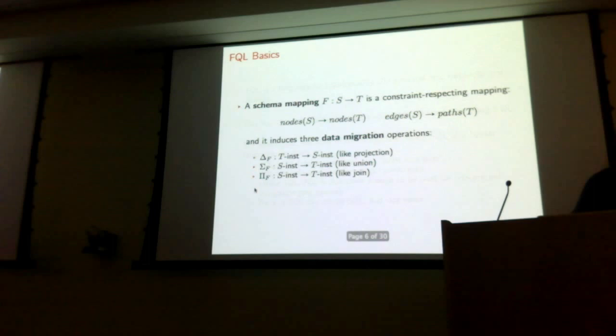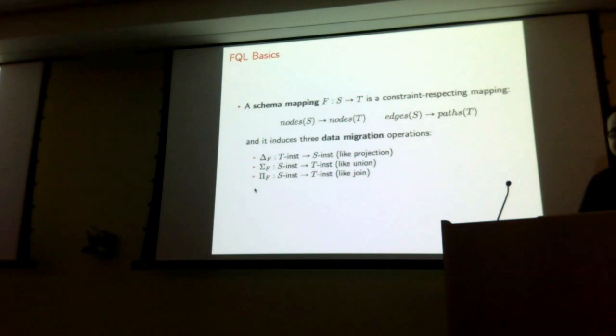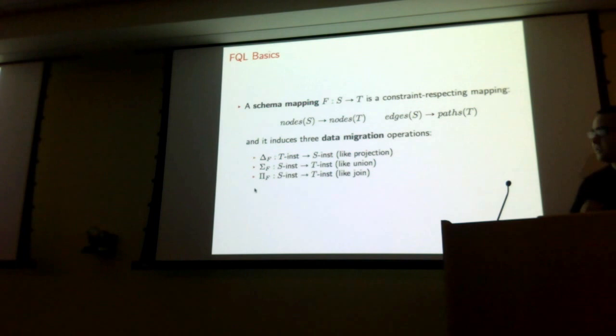So how does this work? Suppose I have two schemas, S and T — those are the ER diagrams I showed you before. I'm going to define something called a schema mapping between them, call it F. What I have to give you is a mapping from the nodes of S to the nodes of T, and from the edges of S to the paths of T. This has to respect the constraints of your schema.